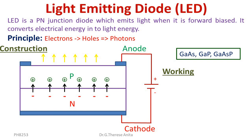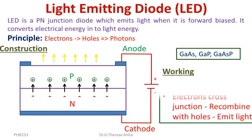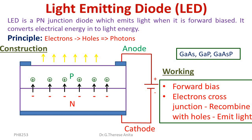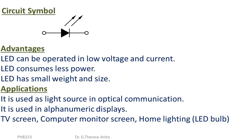Two important points to remember in the operation of LED: first, the LED must be forward biased; second, the electrons cross the junction and recombine with holes, emitting light. The circuit symbol consists of a diode symbol with lines and arrows indicating light emission.